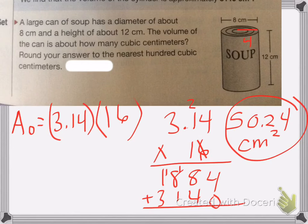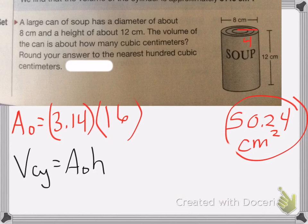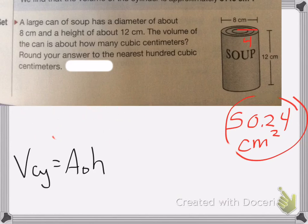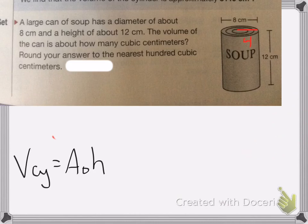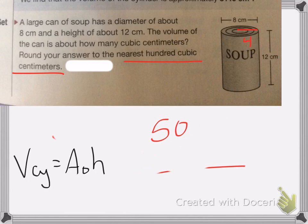Now I'm going to multiply that by my height. The volume of the cylinder is equal to the area of the circle times the height. So I take 50.24 and multiply by 12. Since the problem wants us to round to the nearest hundred cubic centimeters, I can round 50.24 up to 50 and multiply 50 by 12.